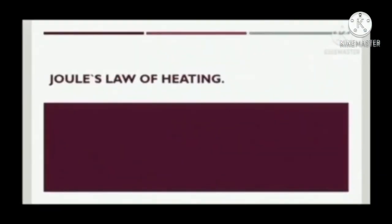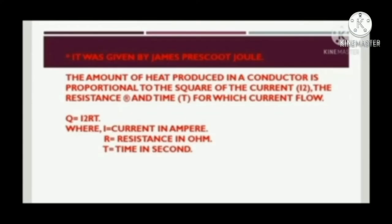Joule's Law of heating was given by James Prescott Joule. The amount of heat produced in a conductor is directly proportional to the square of current, the resistance, and the time for which the current flows. Q equals I squared R T, where I equals current in ampere, R equals resistance in ohm.